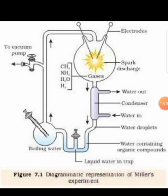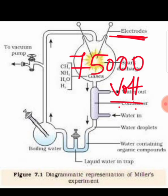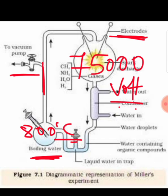Here you can find the Stanley Miller experiment. The ratio of methane, ammonia, and hydrogen taken in the discharge tube is 2:1:2. The electrodes maintain around 75,000 volts of electricity, and the boiling water maintains around 800 degrees Celsius temperature. The gas is removed by vacuum, and the organic molecules are collected in a trap.